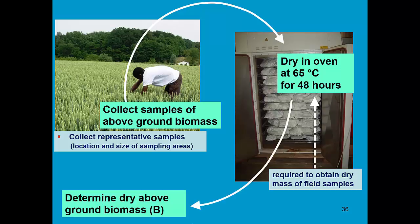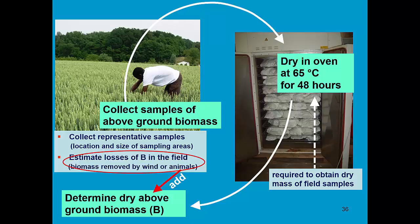Before entering this data in AquaCrop, we need to estimate losses of biomass in the field, because biomass might be removed by wind or animals. We have to make an estimate and add it to the determined dry above-ground biomass.